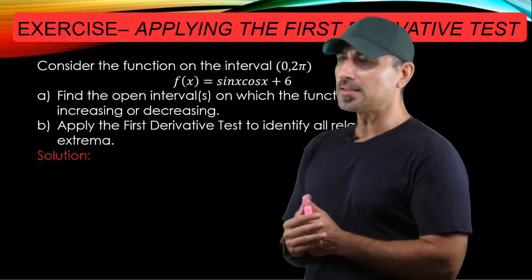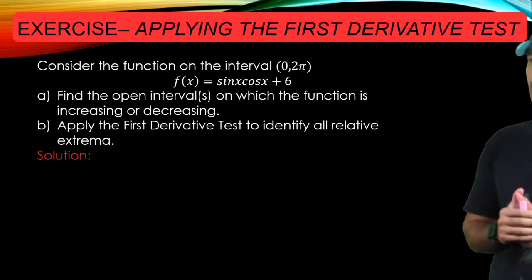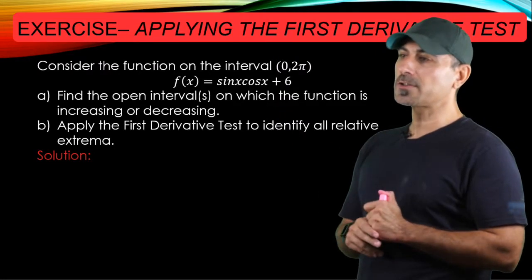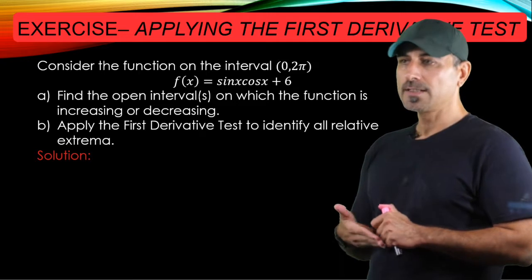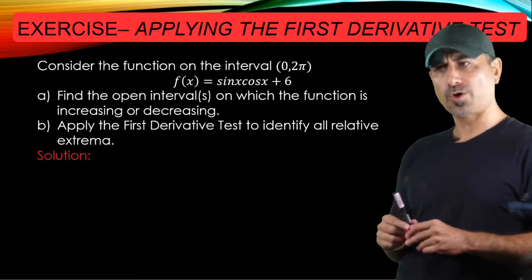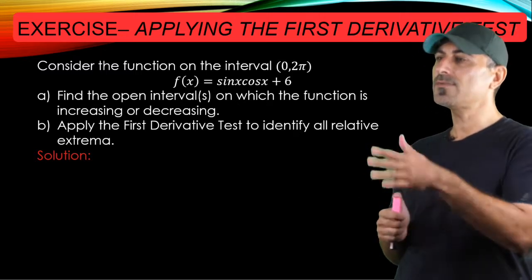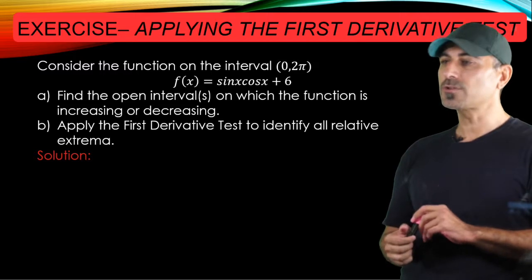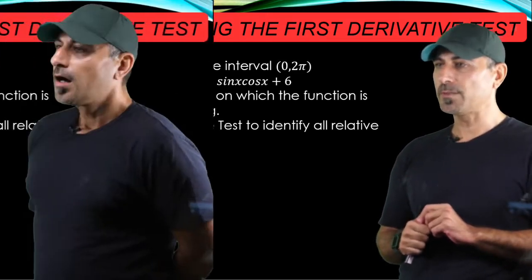And our function now is sine x times cosine x plus 6. And the interval that we're checking for f is 0 and 2 pi. So in the first part of the question, we're going to find open intervals on which the function is increasing or decreasing. That means that we're going to use a test for increasing and decreasing functions, which is in your lecture notes. And then we're going to apply the first derivative test to identify all relative extrema.